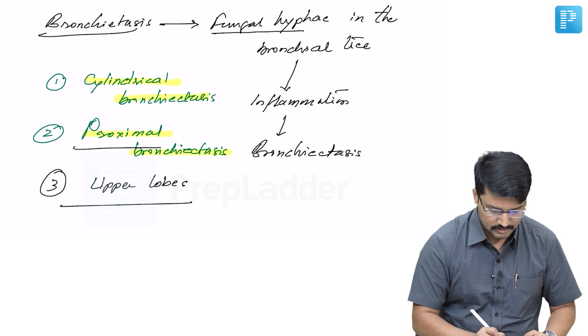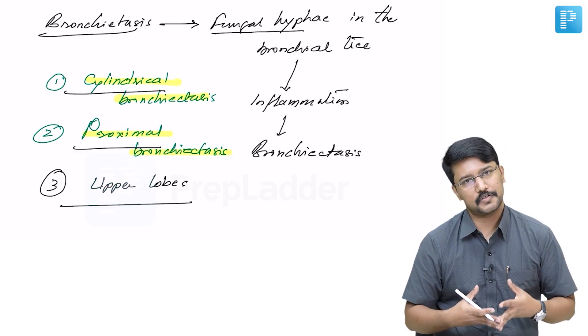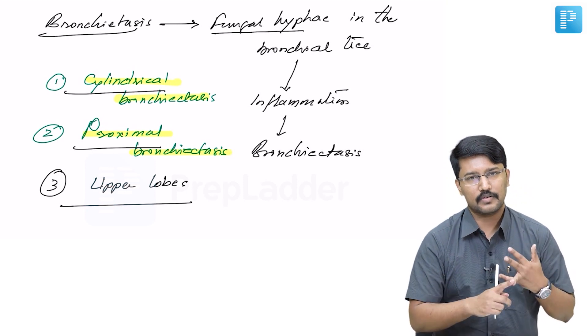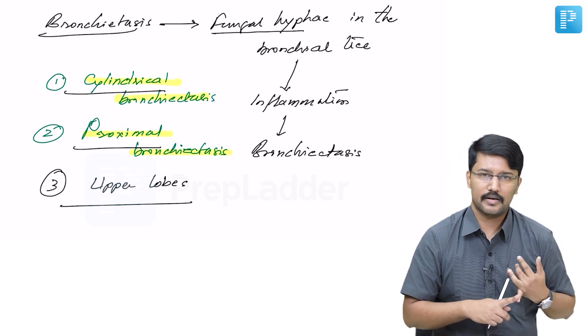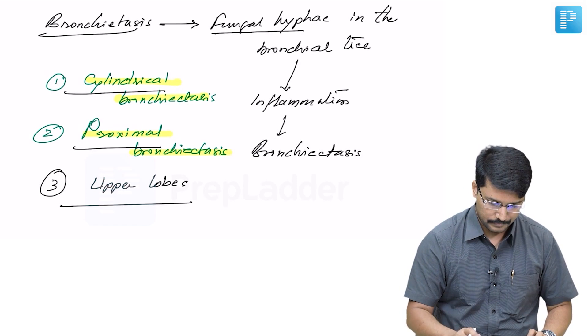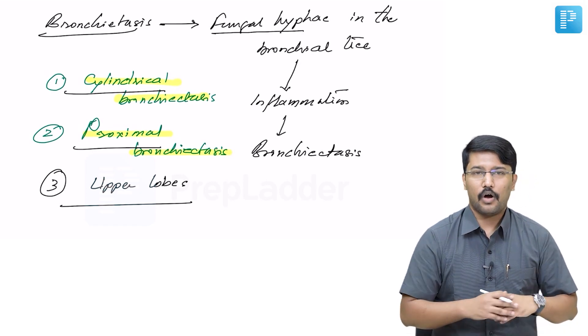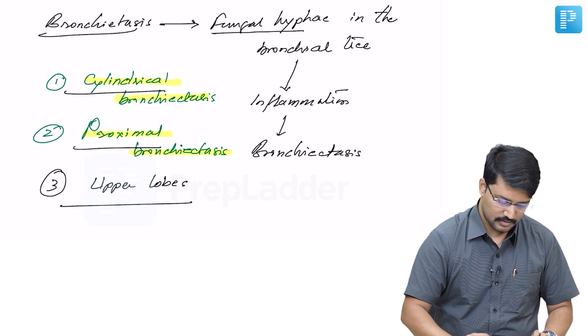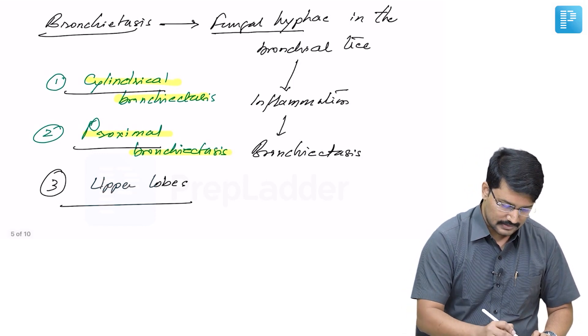Remember these three terms to describe the bronchiectasis in ABPA: cylindrical, proximal, and usually involving bilateral upper lobes. This bronchiectasis on imaging manifests with certain typical signs.